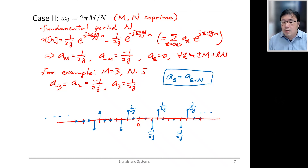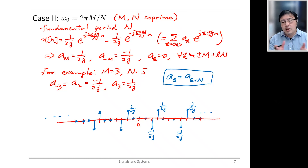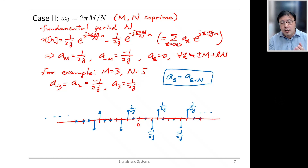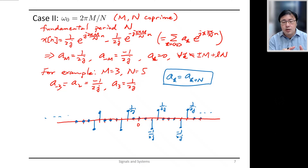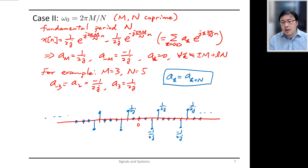If you view the entire sequence of Fourier coefficients as a sequence of values with indices going to infinity, then what you have is a periodic sequence with period N.